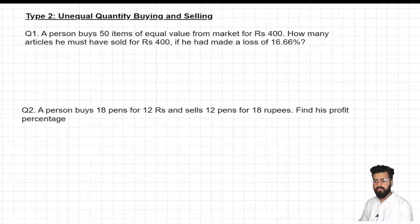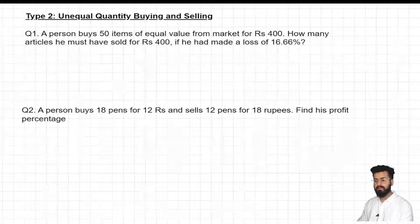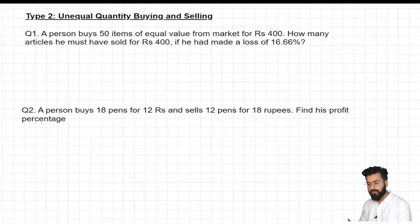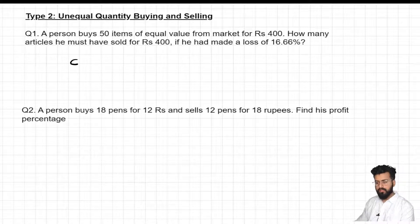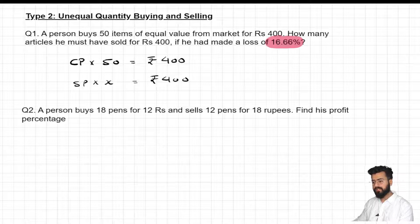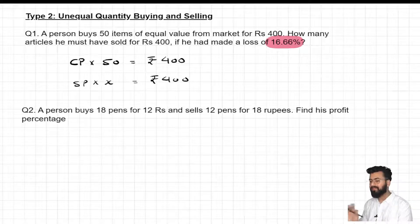So let us start off with the first question. A person buys 50 items of equal value from market for Rs 400. How many articles he must have sold for Rs 400 if he had made a loss of 16.66%? After reading this question, I hope many of you must have realized that we have already solved a question like this in the last lecture. In fact, it was the last question of that session.